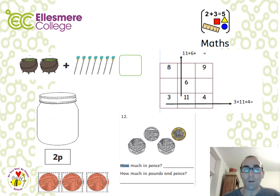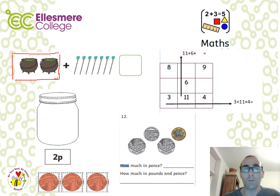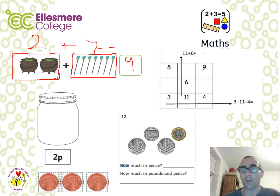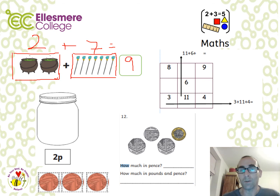In lessons three and four we're going to look at some basic addition — starting with additions that everybody should be able to do. In this example here: two cauldrons add seven broomsticks gives us an answer of nine. We can use counters or number lines to support us.